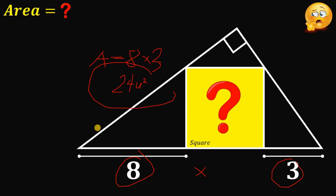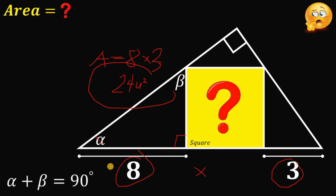That's the shortcut, but what is the formal way to solve this kind of question? Let's begin. Let's call this angle alpha and this angle beta. Since alpha and beta are the acute angles of a right triangle, we can say that alpha plus beta must be equal to 90 degrees. Now we have beta here, and we know this angle is 90 degrees.